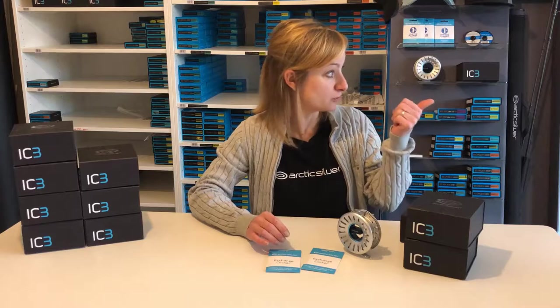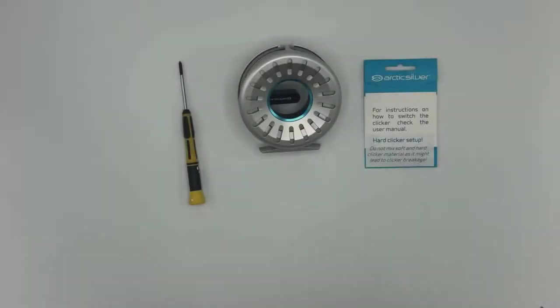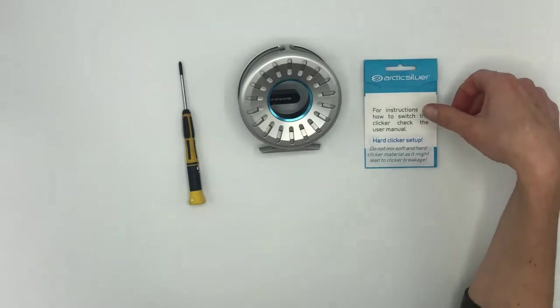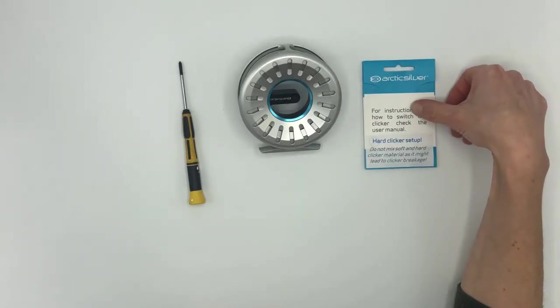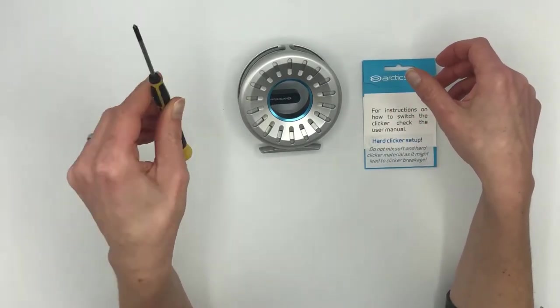Let's head over to my photobox right there because there you can see it much better. Okay, let's go to change the retriever direction from right to left and also change the clicker setup from soft to hard clicker setup. All you need is a screwdriver.